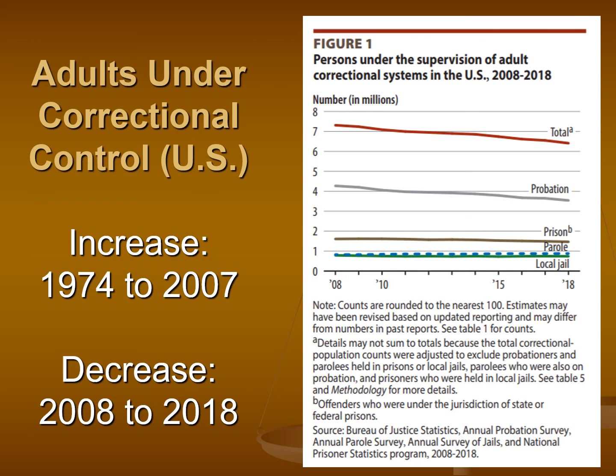One of the nice things — the silver lining — is we are seeing somewhat of an easing on our correctional system over the last decade, with less prison and jail overcrowding. The two key takeaways are: first, that marked five-fold increase from the mid-1970s up until the first decade of the 2000s; and second, a bit of a silver lining in the rough decrease over the past decade or so.